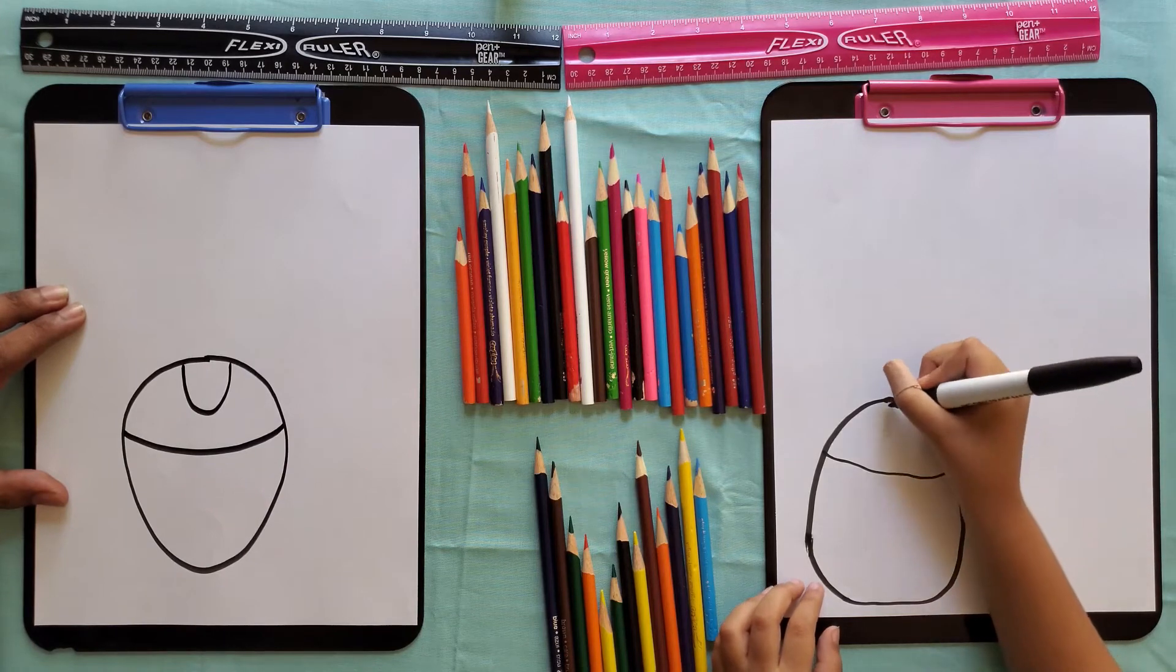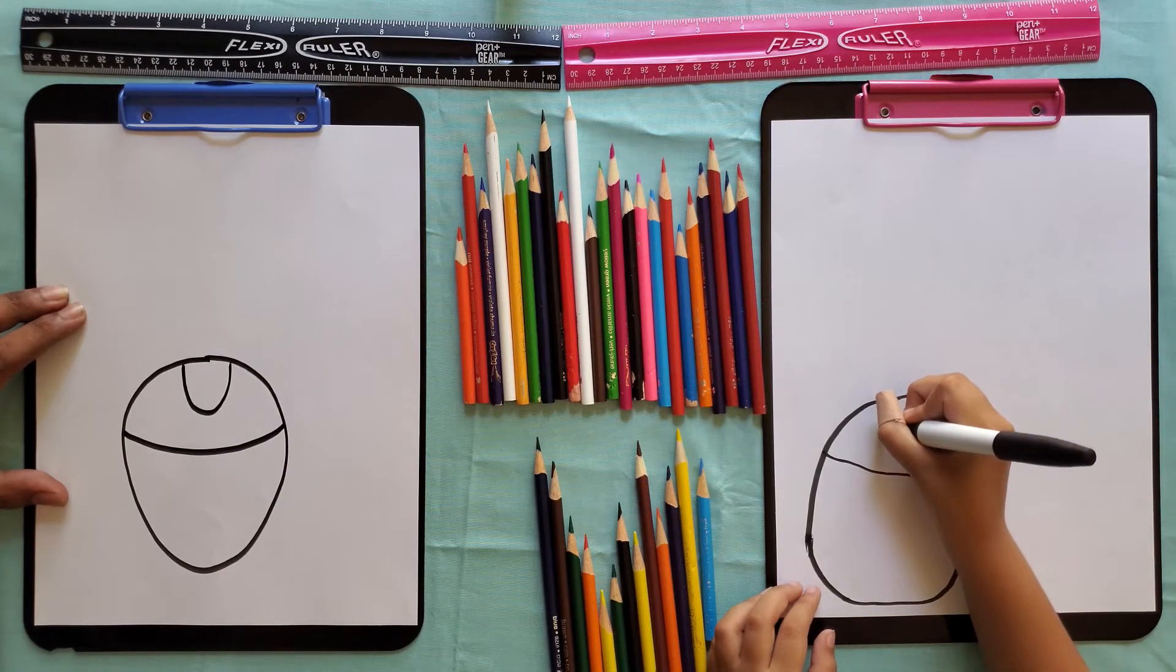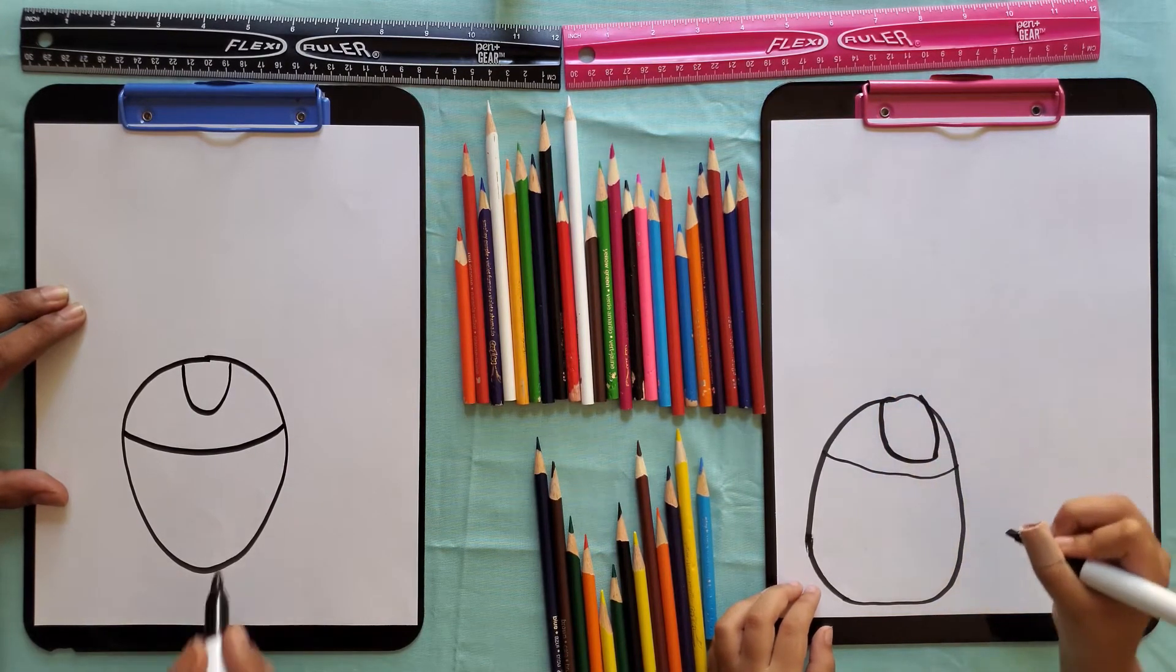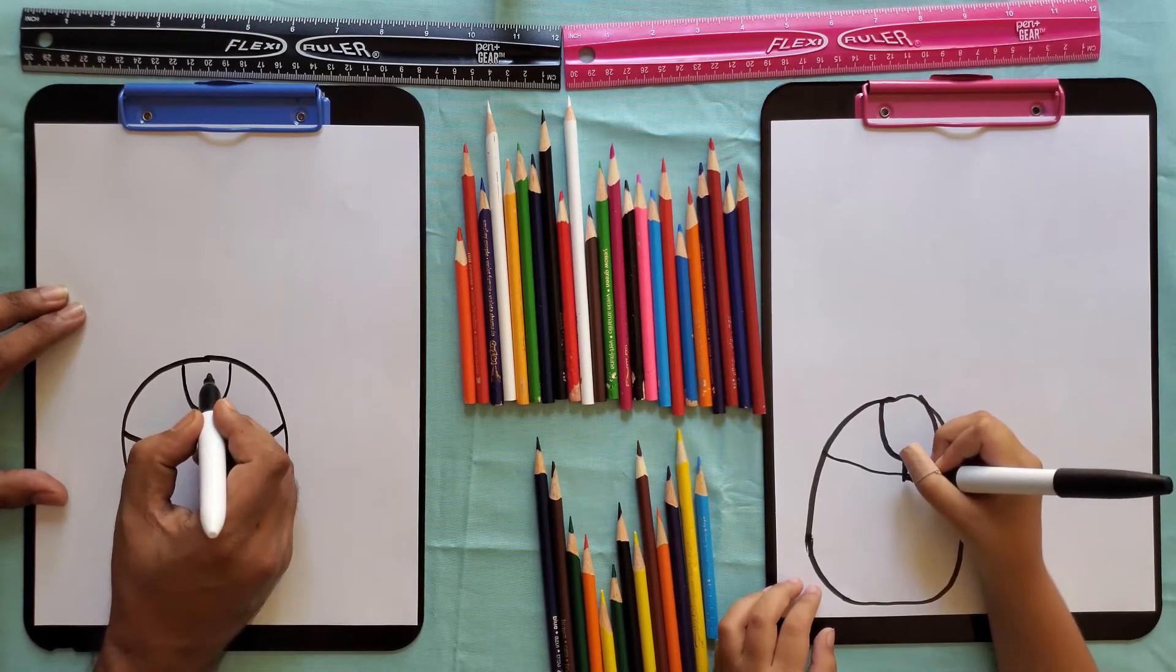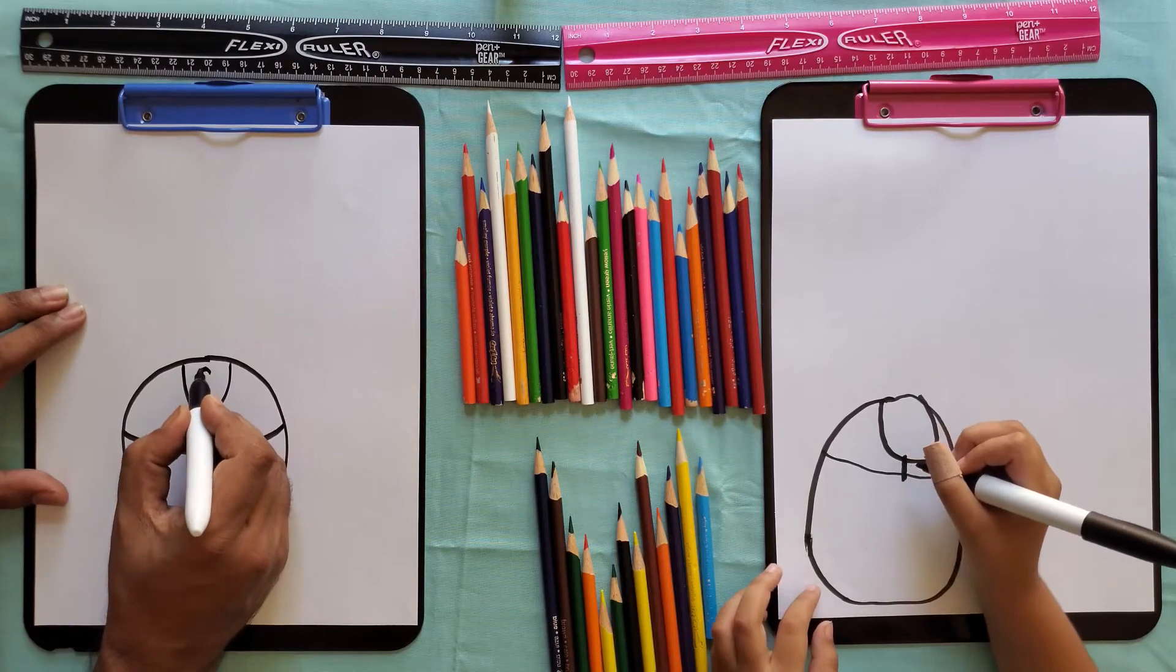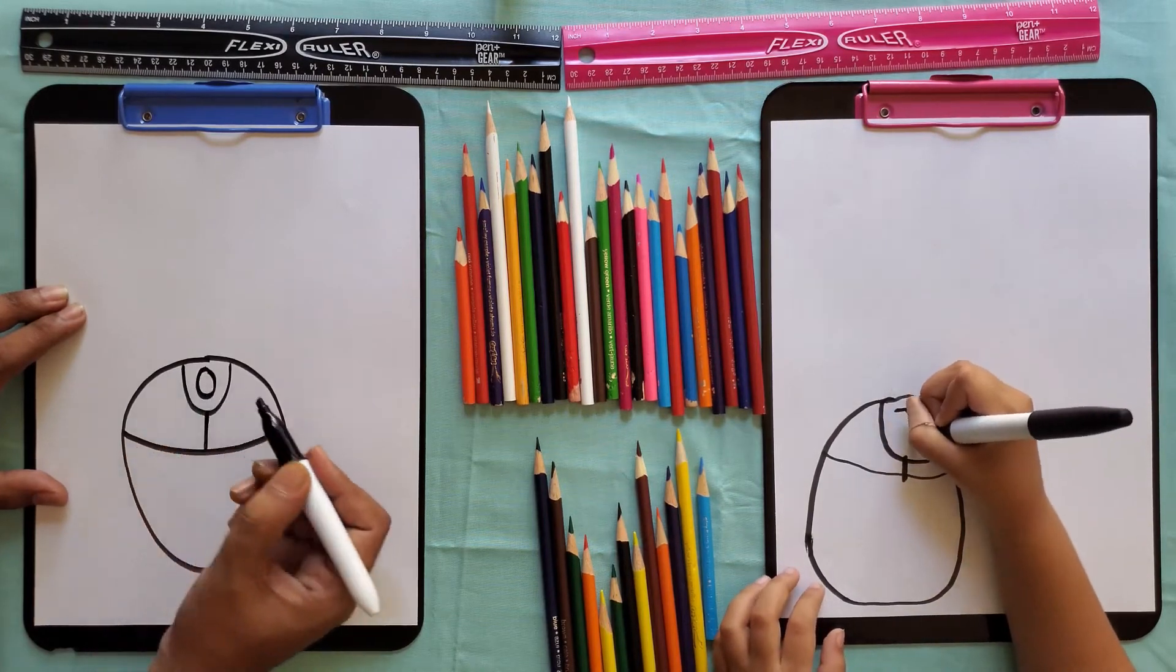And now draw you like this. And around like this. Then a circle like this.